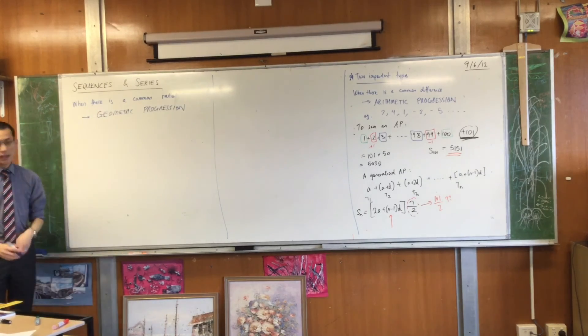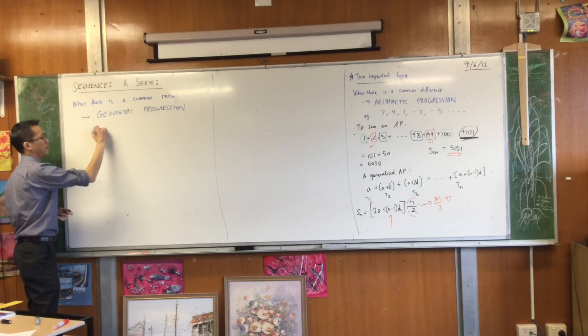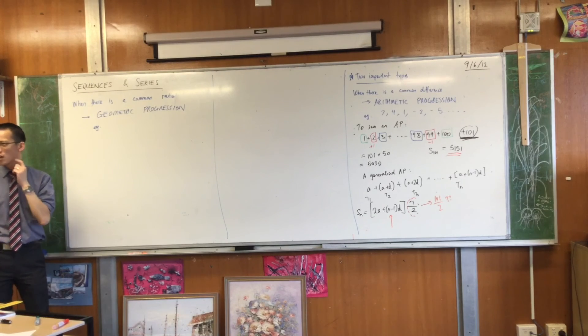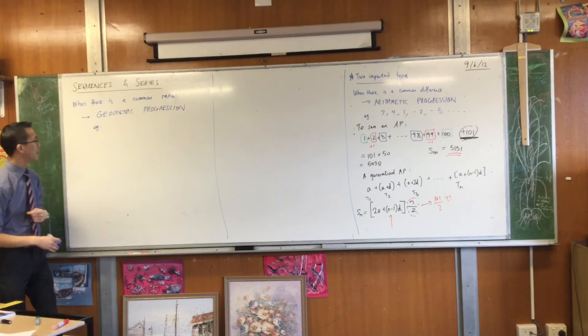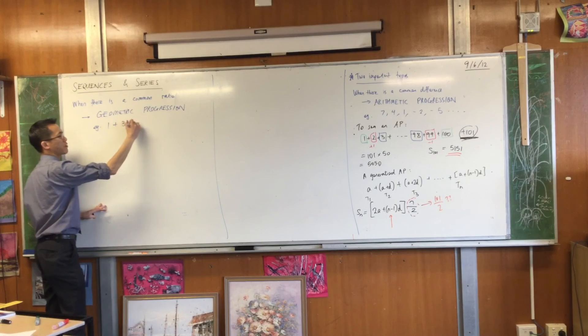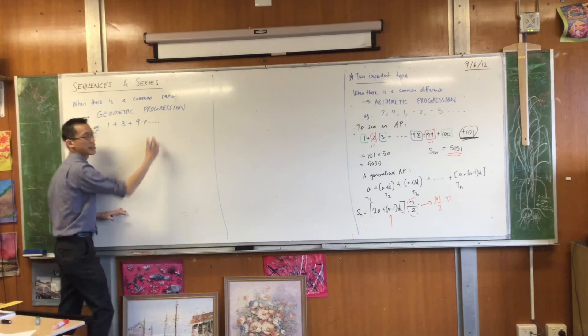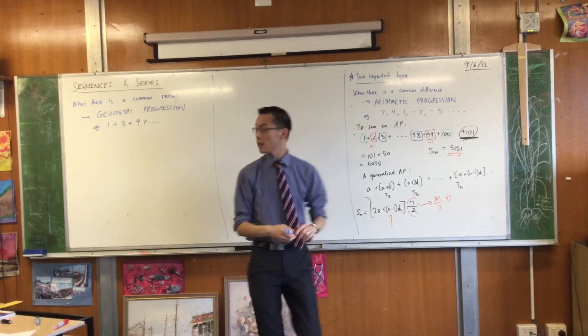We call it, instead, as an example, like you saw before, I think the one I gave you was a half plus a quarter plus an eighth. You can come up with anything you like. You could say, one plus three plus nine, et cetera. That would be another GP, geometric progression.